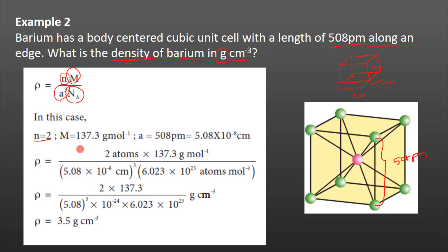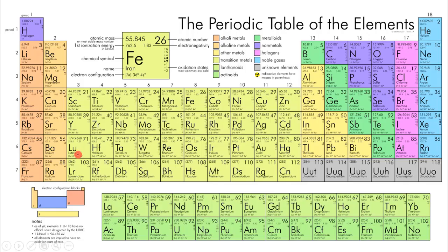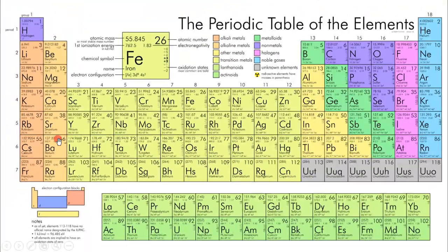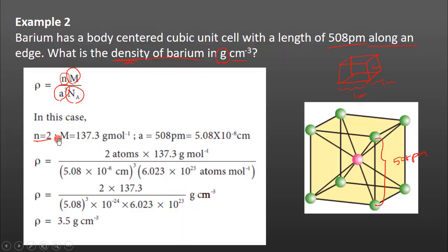The molar mass comes from the periodic table. For barium, the molar mass is 137.327, so we use 137.3 grams per mole.